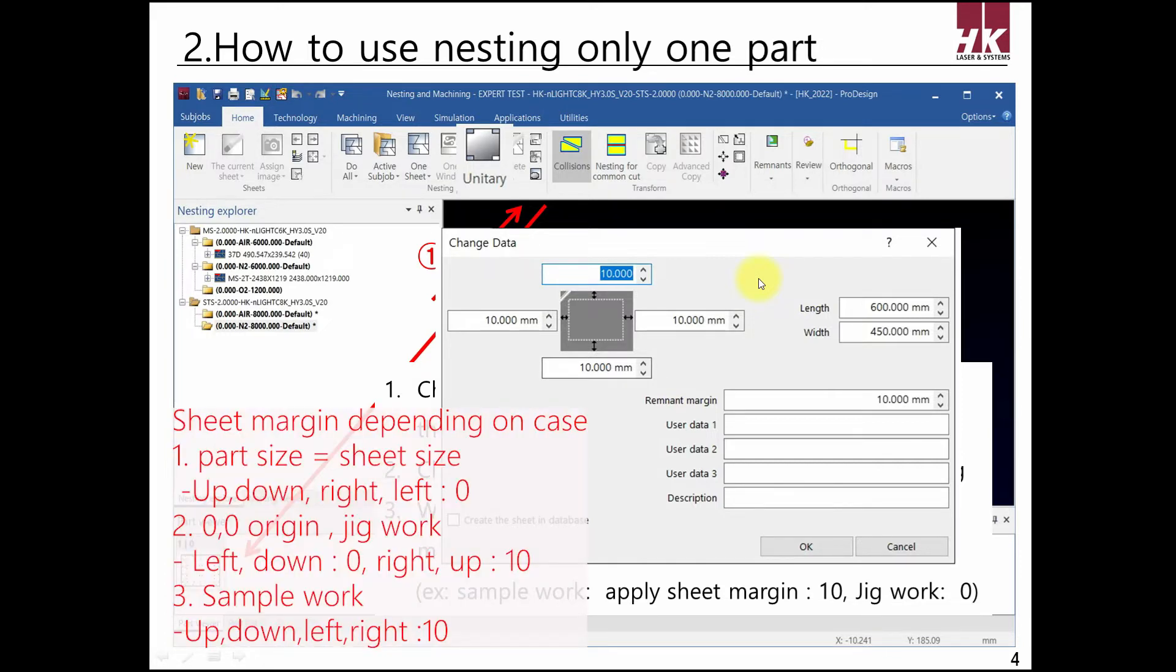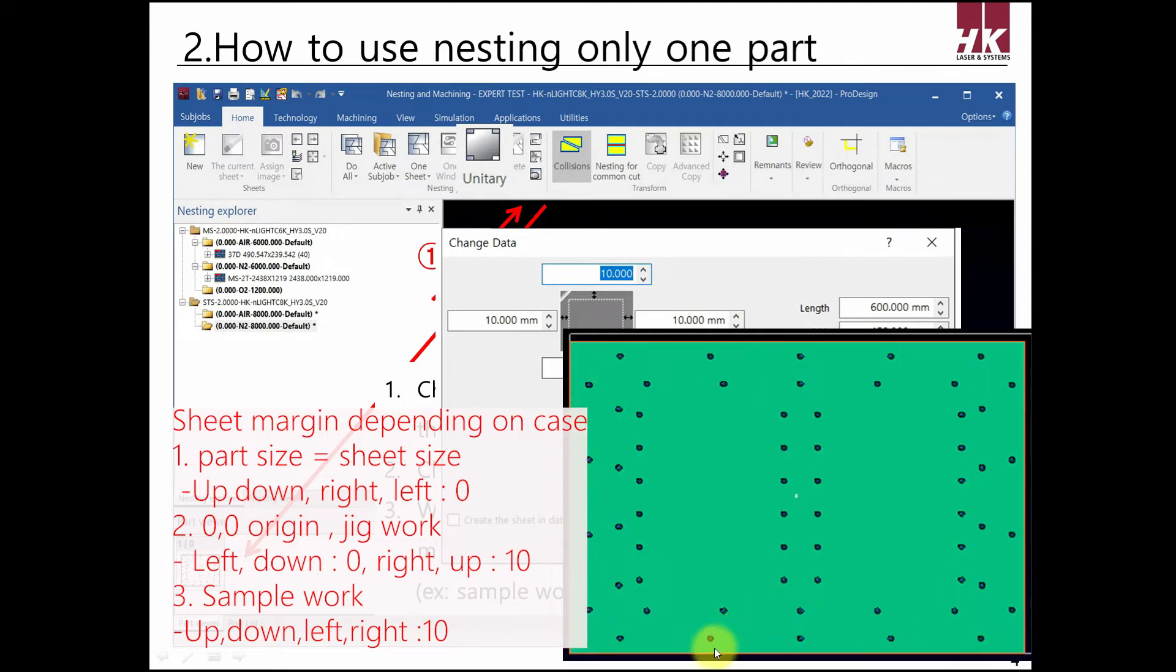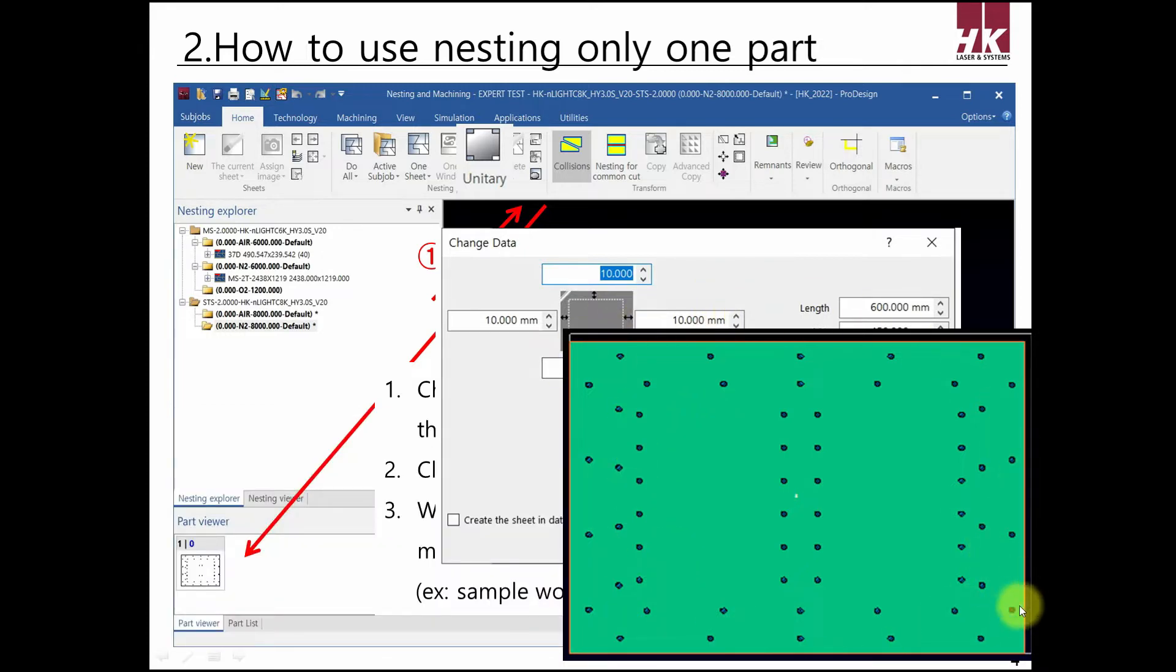If material and part size is the same, input margin 0. If part is slightly larger than material, try to stick to origin. Input 0 on left and down and remaining value on right and up. Then part will be nested as shown above.